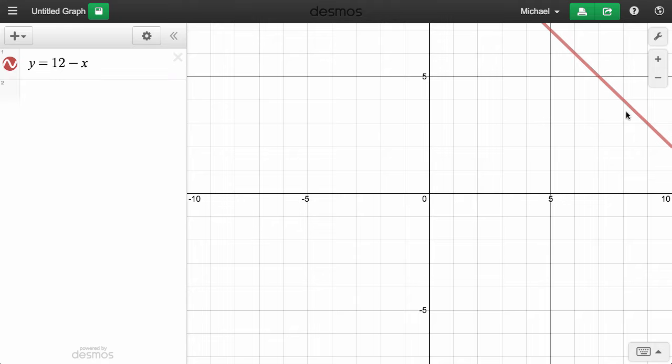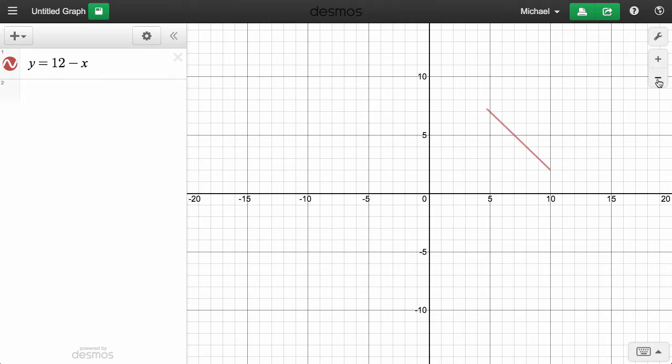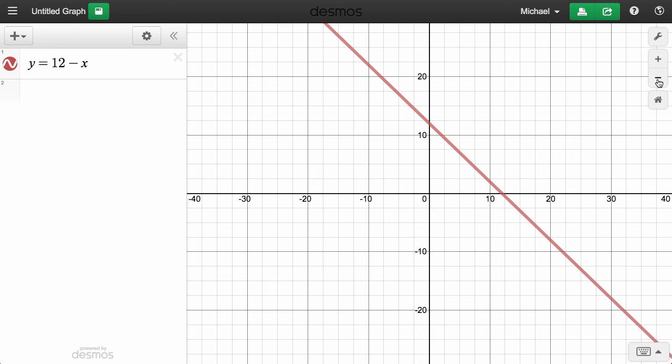To get a better view of our graph, click zoom out two or three times. For more precise control over the window, try the graph settings menu.